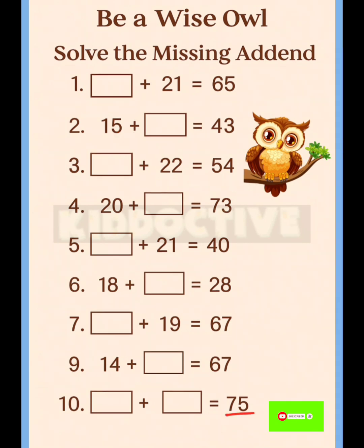In the tenth problem, there are two addends missing. How to do that? Number extension: 75 equals 70 plus 5. We can write 75 in different ways, like 72 plus 3 equals 75. These are the methods you are going to use to solve this worksheet.